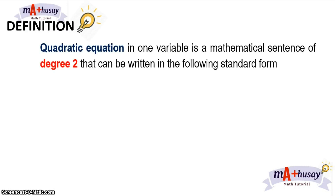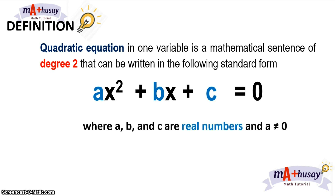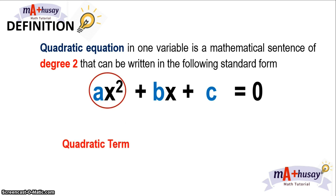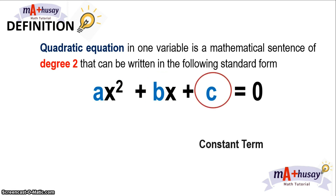What is a quadratic equation? A quadratic equation in one variable is a mathematical sentence of degree 2 that can be written in the following standard form: ax squared plus bx plus c equals zero, where a, b, and c are real numbers, and a must not be equal to zero. There are three terms: the ax squared is the quadratic term, bx is the linear term, and c is the constant term.